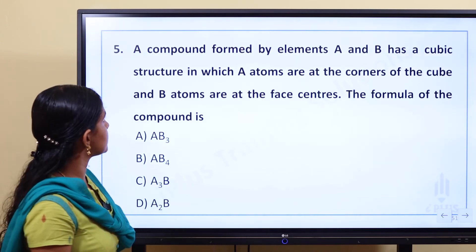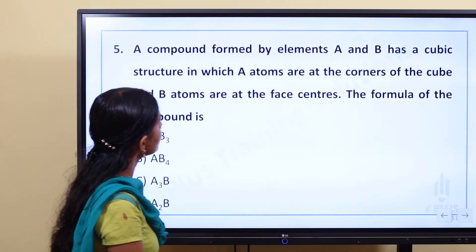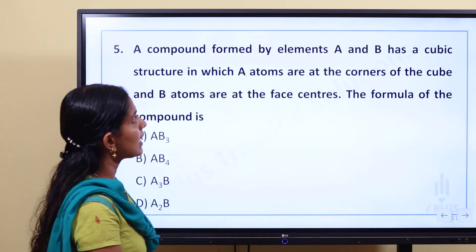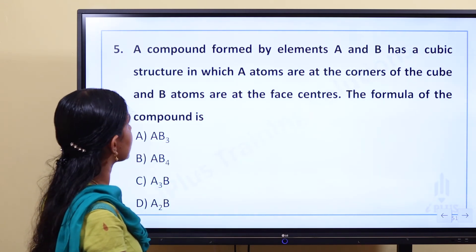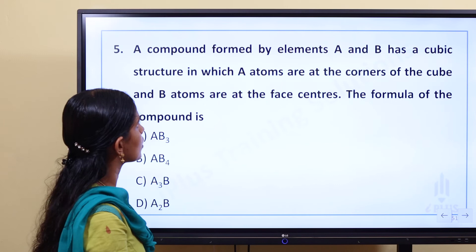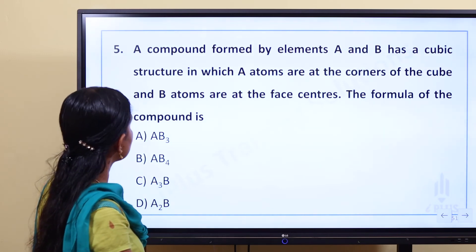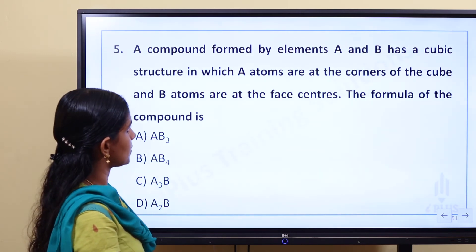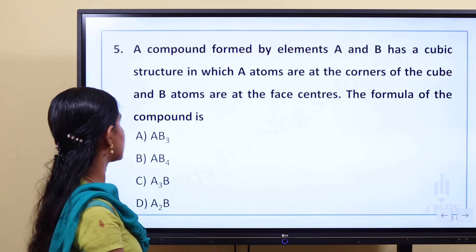Last question: A compound formed by elements A and B has a cubic structure in which A atoms are at the corners of the cube and B atoms are at the face centers. The formula of the compound is what we need to find.